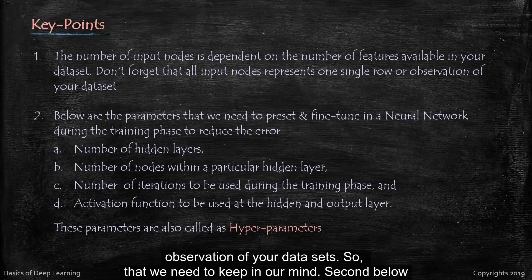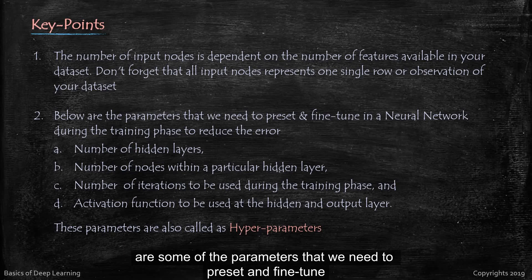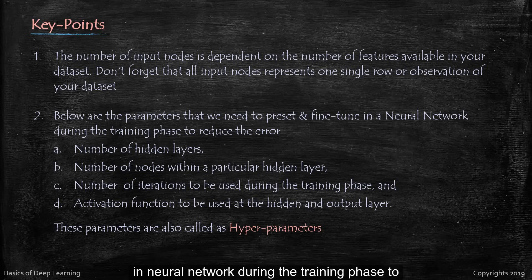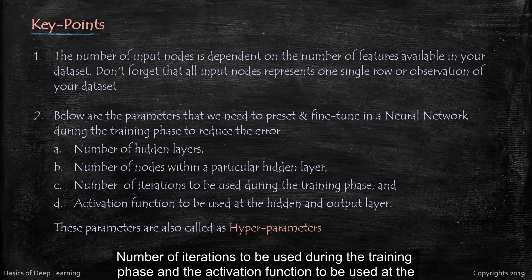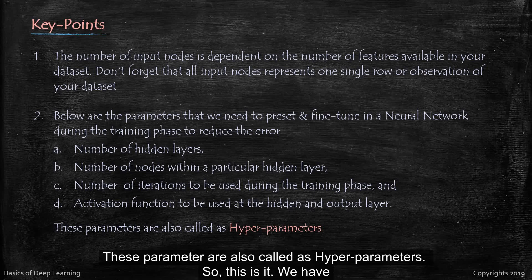Second, below are some of the parameters that we need to set and fine tune in neural network during the training phase to reduce the error. So first is number of hidden layers that we need to decide while training the neural network, number of nodes within a particular hidden layer, number of iterations to be used during the training phase, and the activation function to be used at the hidden and output layer. These parameters are also called as hyperparameters.